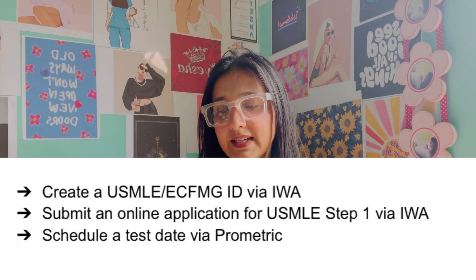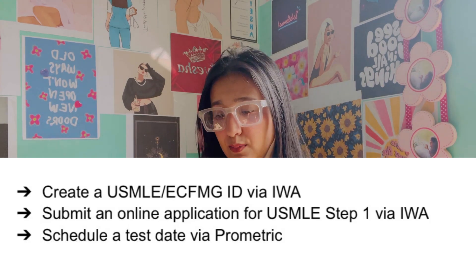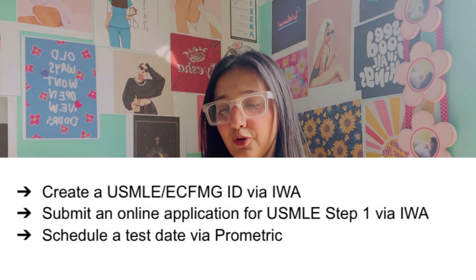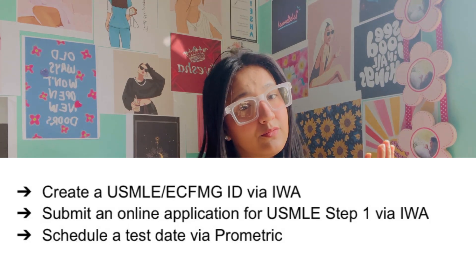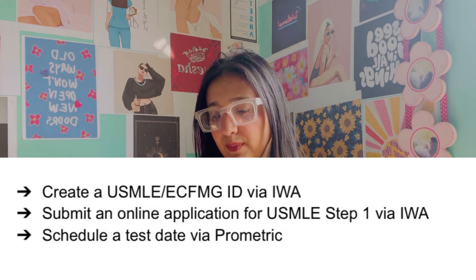Let me clarify the general procedures to follow when appearing for the USMLE exam. First, you have to create a USMLE ID via IWA. Then submit an online application form for the USMLE step via IWA. Then you will be given a permit, and the exams will be via Prometric. So these are the steps: create your account and then appear for your exam. That's the short overview of USMLE.